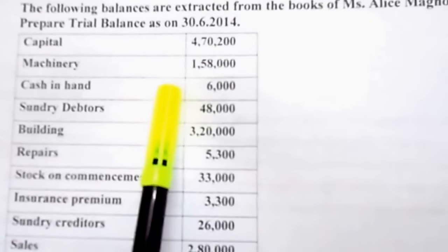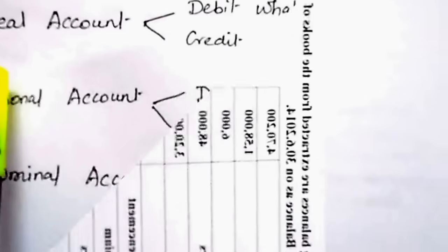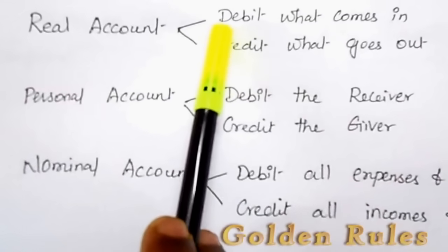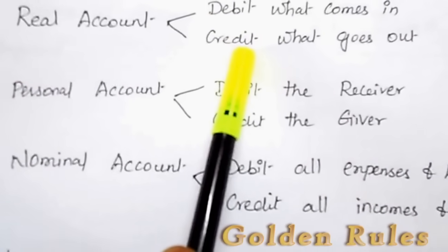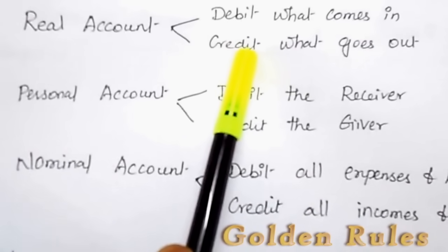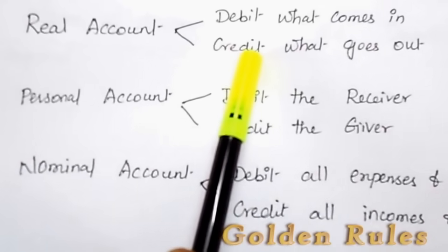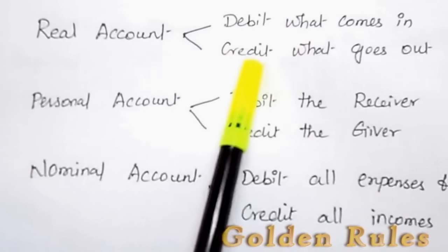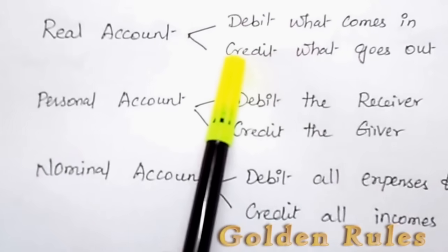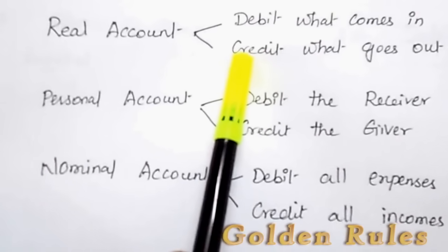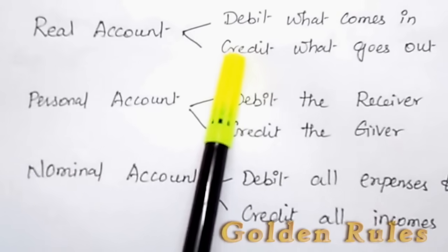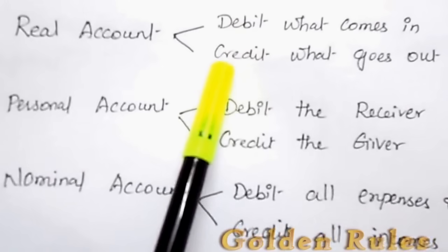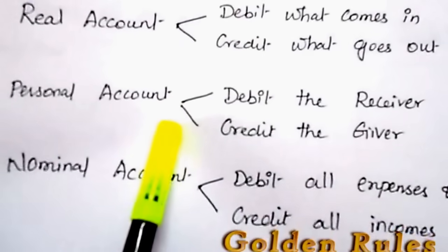The three golden rules correspond to three account types. First, real account: the rule is debit what comes in, credit what goes out. The best example is cash. When you purchase any item, cash goes out and the item comes in. When you sell something, goods go out and cash comes in. Apart from cash, all assets — whether current or fixed — belong to real account.